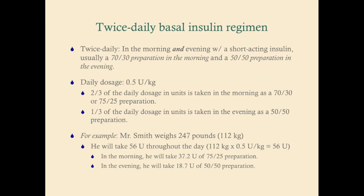Here's an example: Mr. Smith weighs 247 pounds, which is 112 kilograms. You want to place him on a twice-daily basal insulin regimen. 112 kilograms times 0.5 units per kilogram equals 56 units per day. In the morning, he takes two-thirds of 56, which is about 37 units, as the 75/25 preparation. In the evening, he takes the remaining one-third — about 19 units — as the 50/50 preparation.